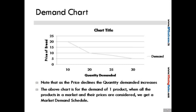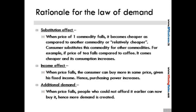There are a couple of rational factors behind the law of demand: the substitution effect, income effect, and additional demand effect. The substitution effect means that when the price of one commodity falls, it becomes cheaper relative to other commodities and the consumer substitutes it for those others. For example, when the price of tea falls, people take more tea and less coffee, since both provide similar satisfaction and tea now does so at a lower price.